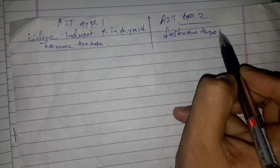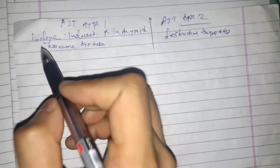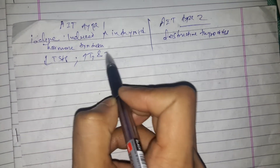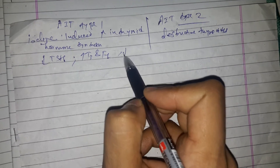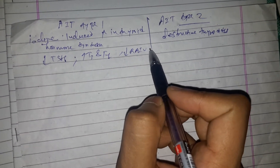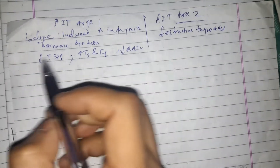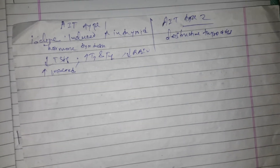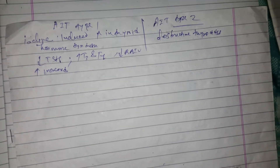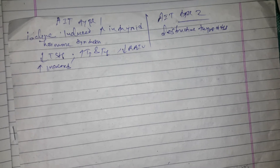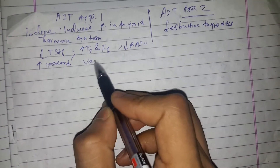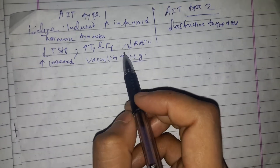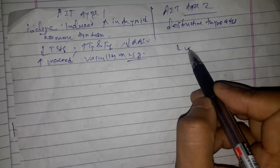In Type 2 (destructive thyroiditis), TSH is decreased and T3 and T4 are increased. Radioactive iodine uptake is decreased, and on ultrasonography you can see increased vascularity in Type 1.